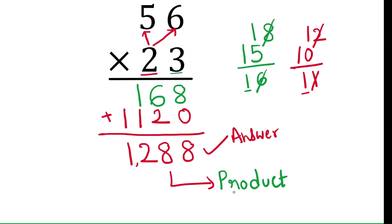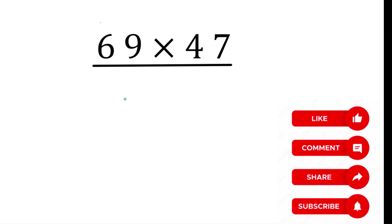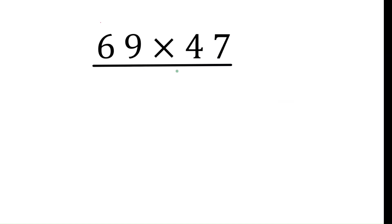1288 is the answer. This answer is called the product. The product is the result of multiplying 56 and 23. Now let's find the product of 69 and 47, written in row-wise format.